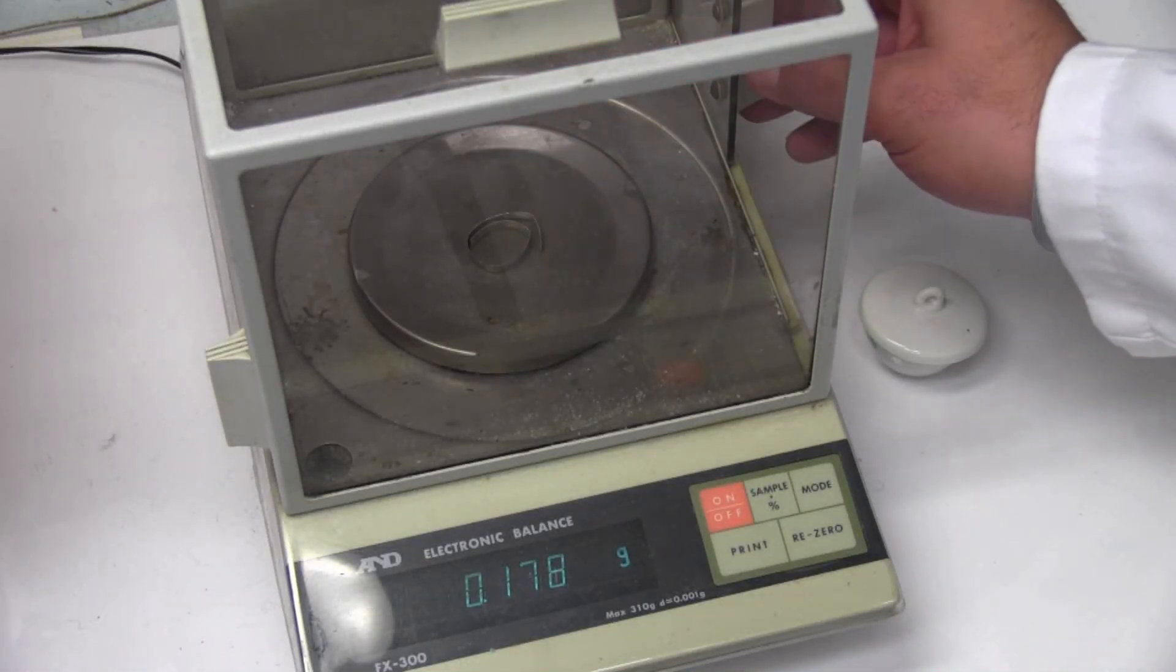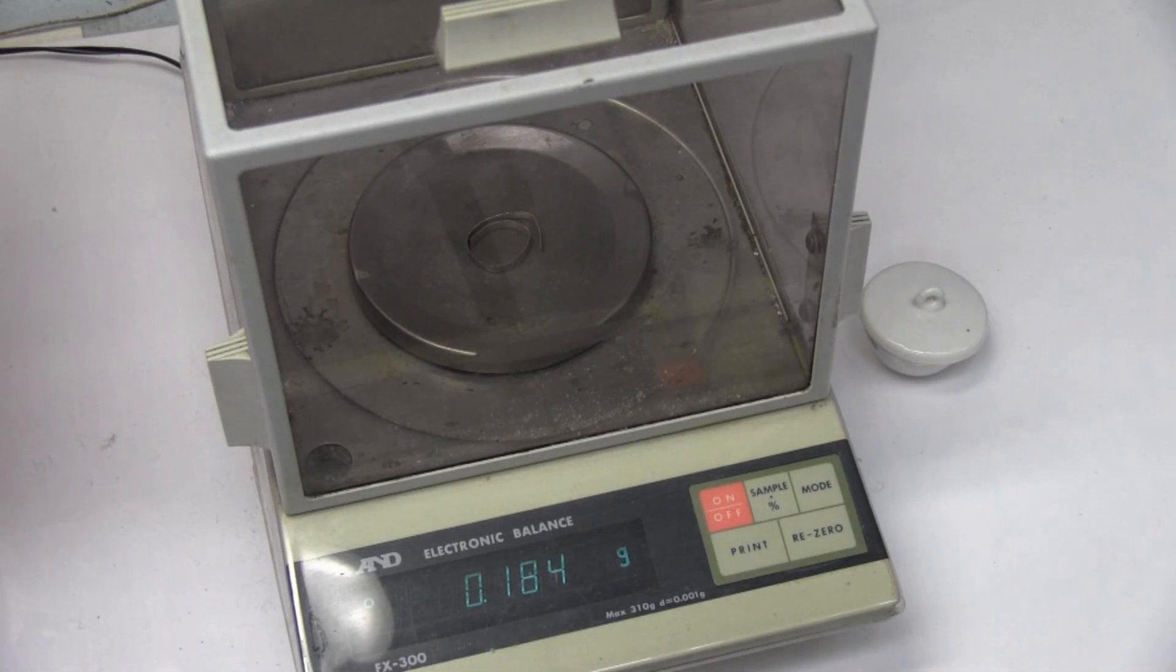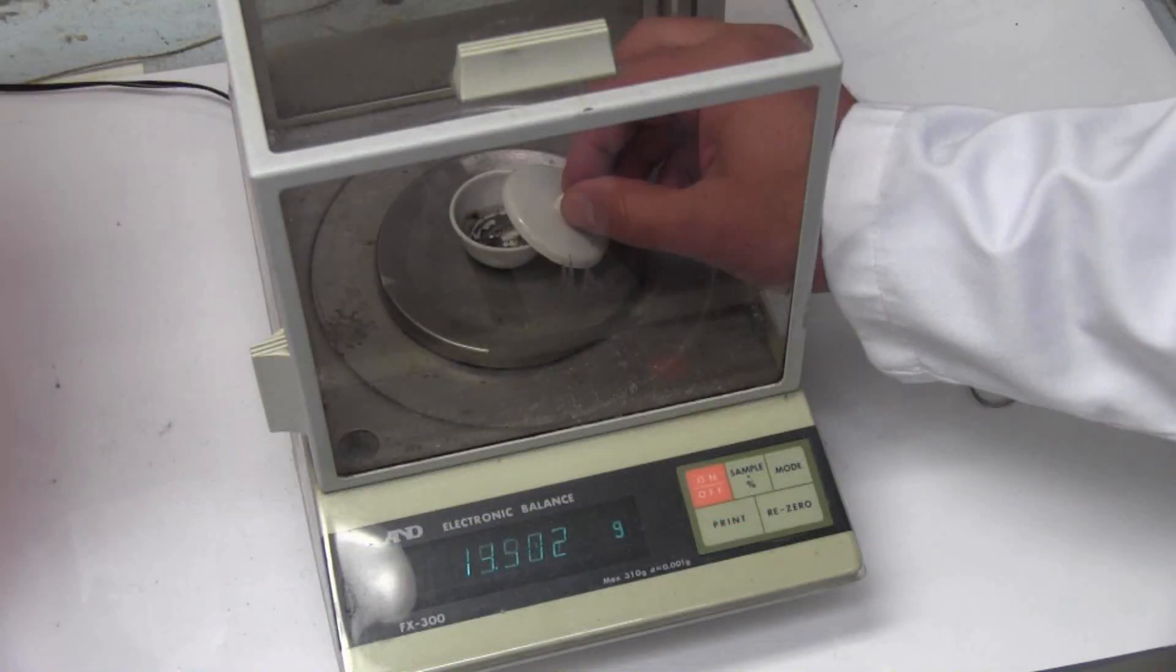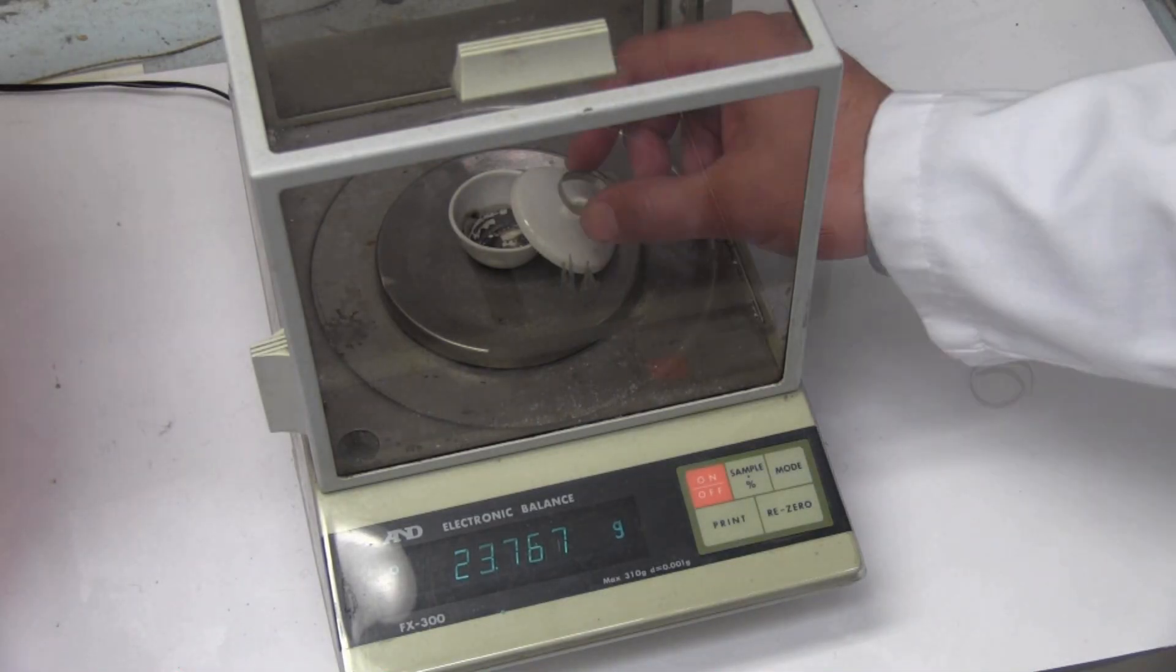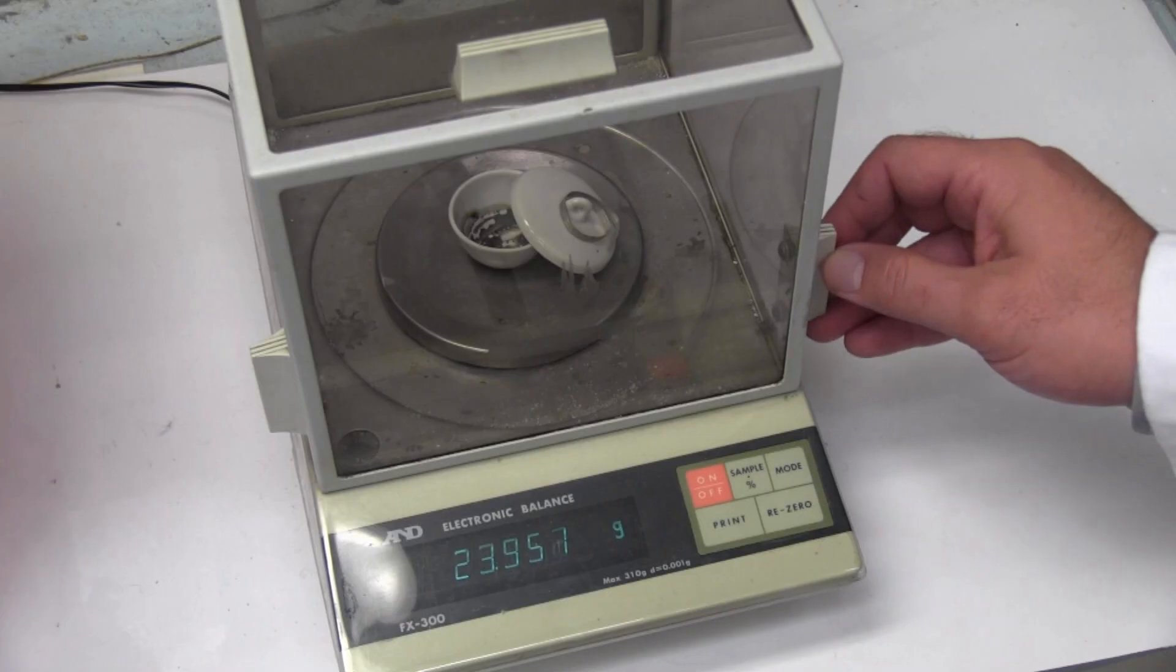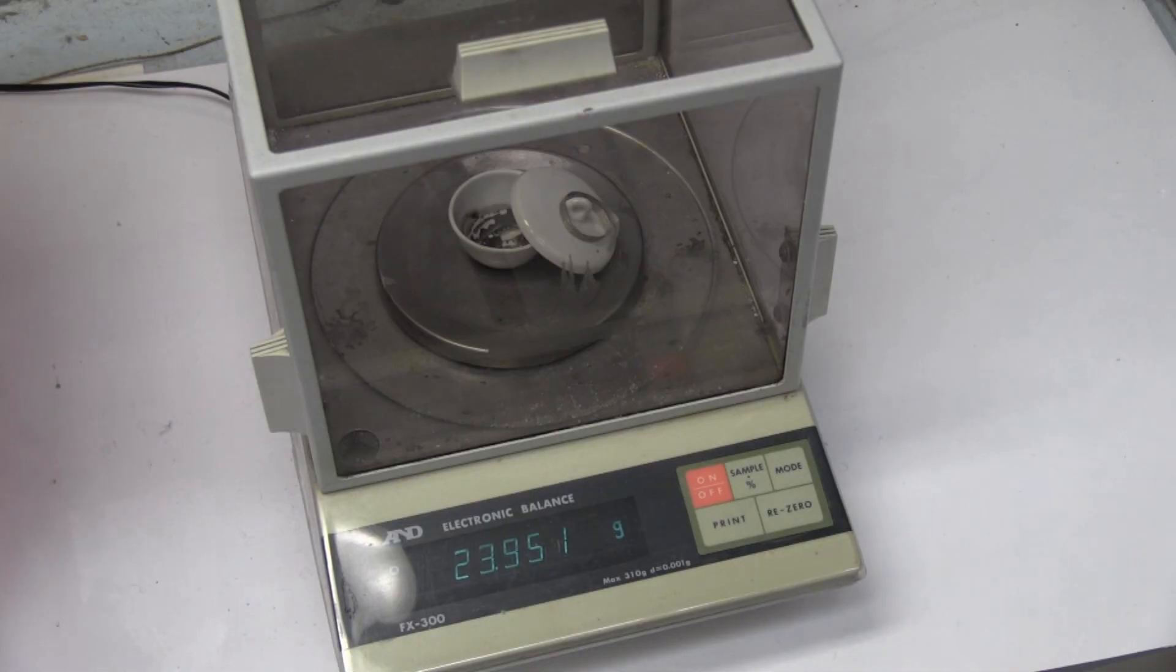This strip of magnesium has a mass of 0.184 grams. The crucible and lid have a mass of 23.767 grams, and the combined total is 23.951 grams.